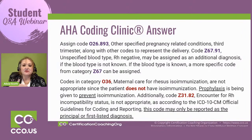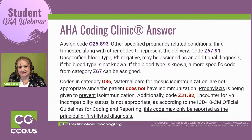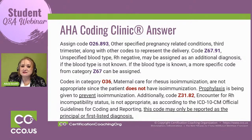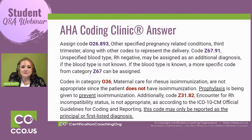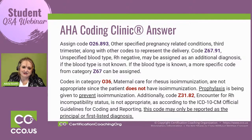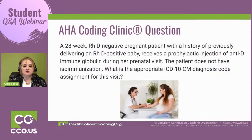It's not appropriate to code O36 — that's just like saying a patient has HIV or diabetes when they don't. You're also not going to code Z31.82, because the patient hasn't reached that incompatibility — it's not appropriate to assign that code. Also, that Z31.82 code can only be used as a first-listed diagnosis. So very interesting — let's move on to another scenario.